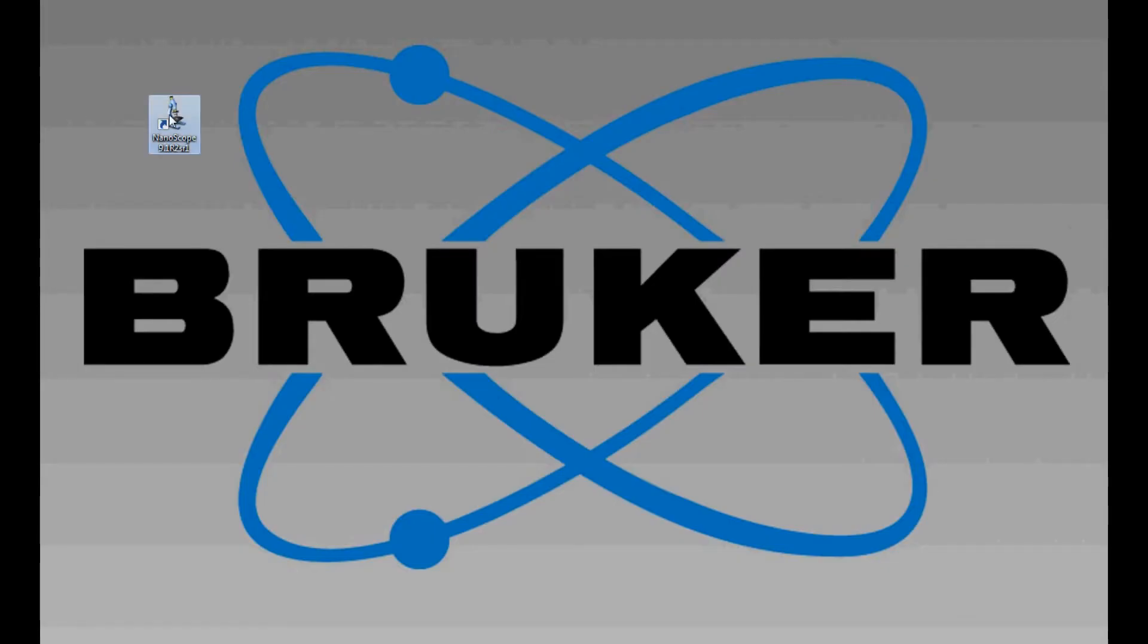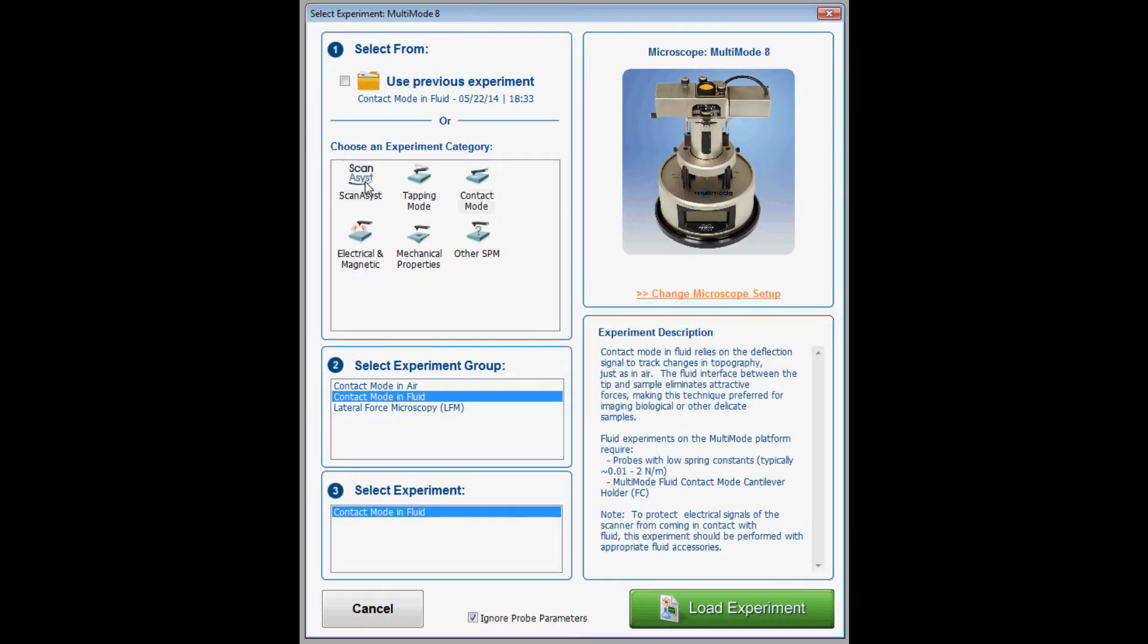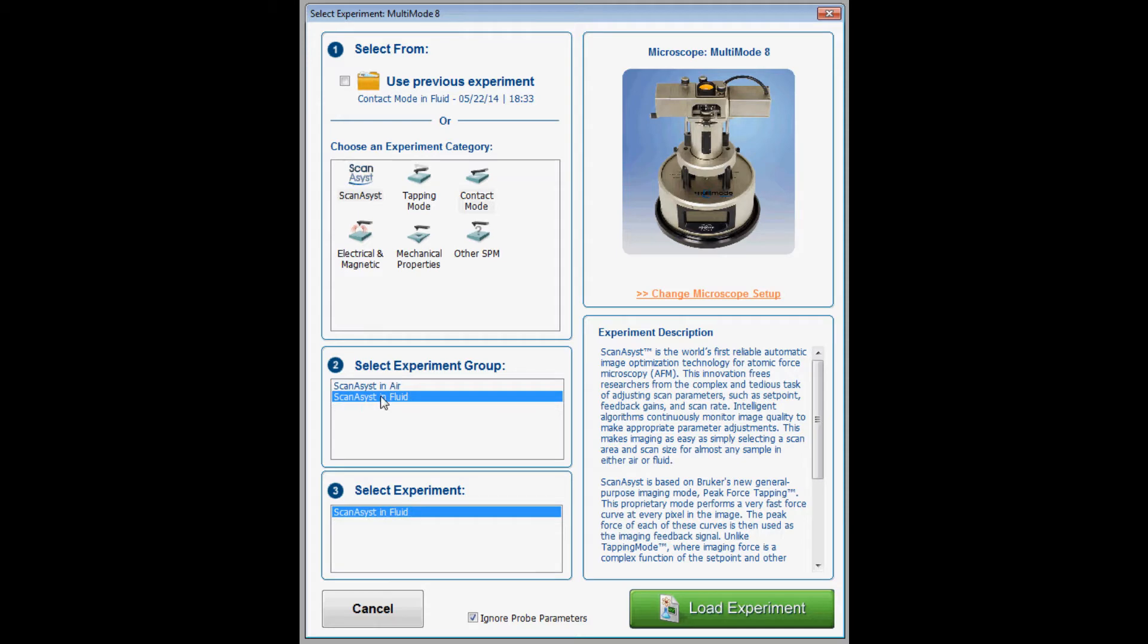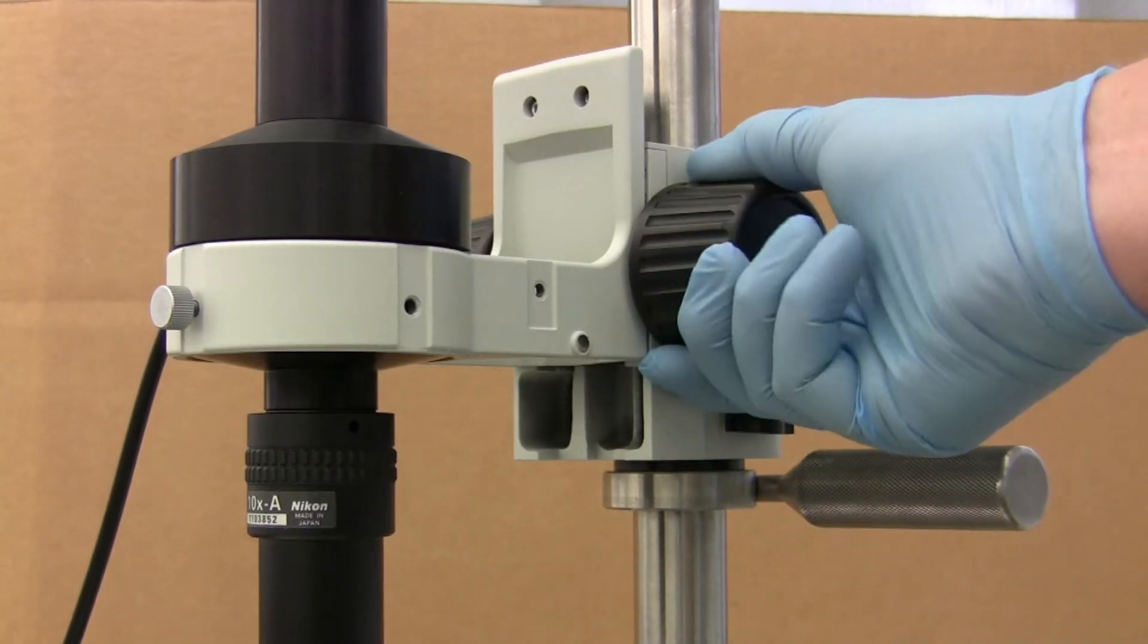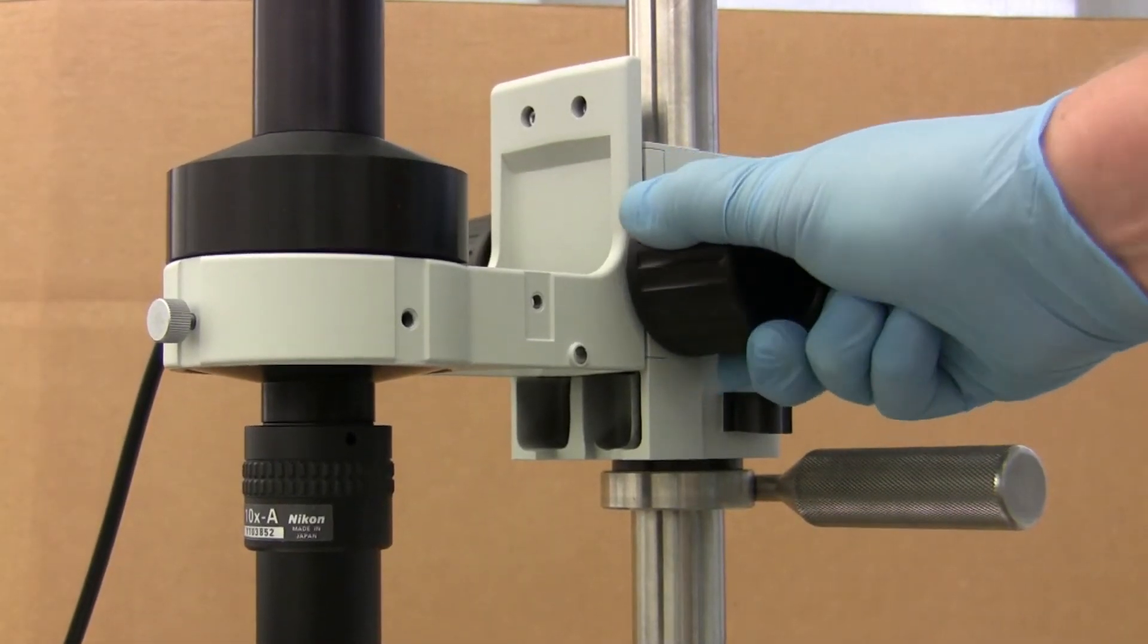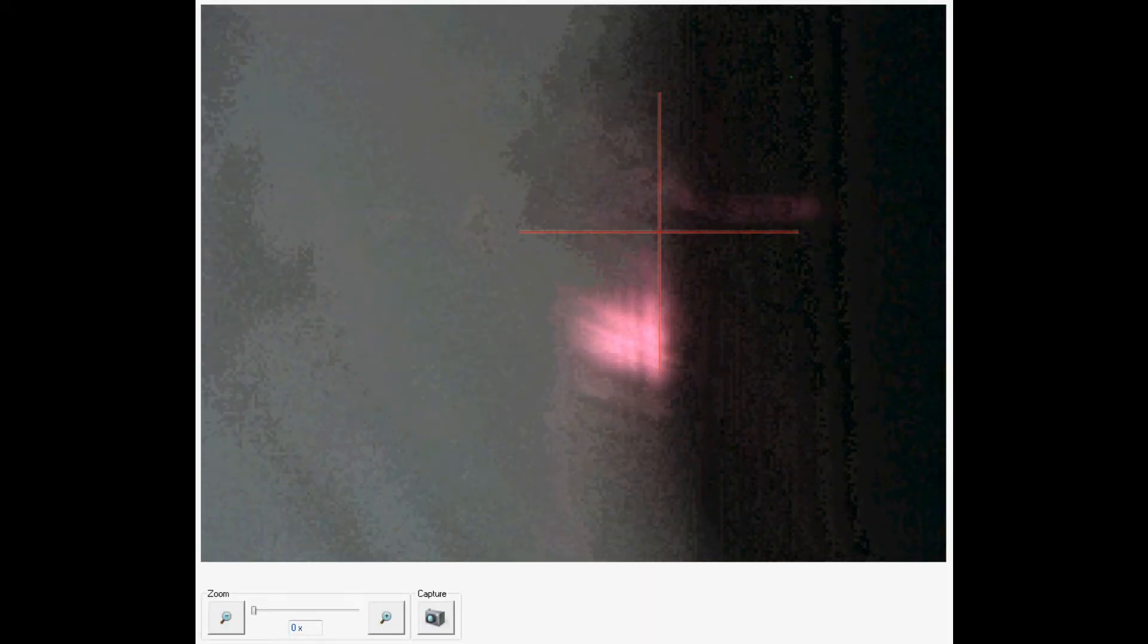Start the nanoscope software. Select scan assist mode from the experiment category and scan assist in fluid from the experiment group. The optical microscope camera can be used to view the probe. Use the optical microscope's position knobs to focus the camera onto the probe and the sample surface to make sure they are within normal approach distance.